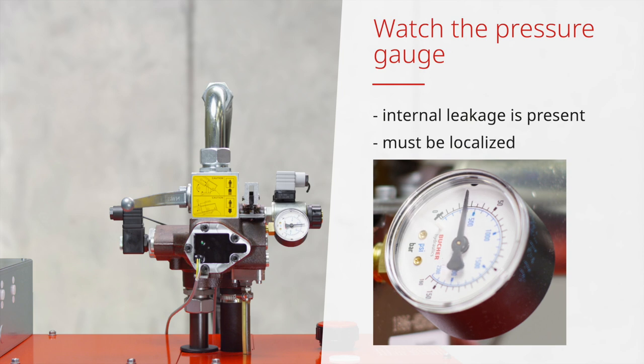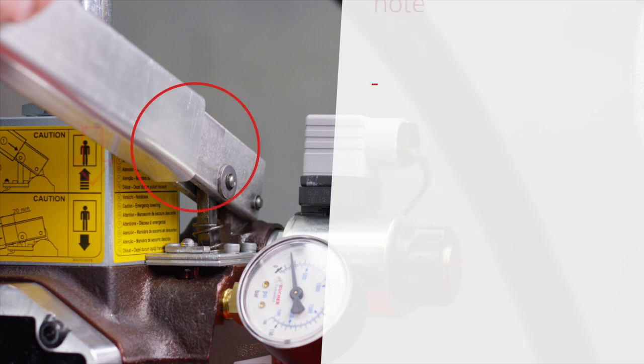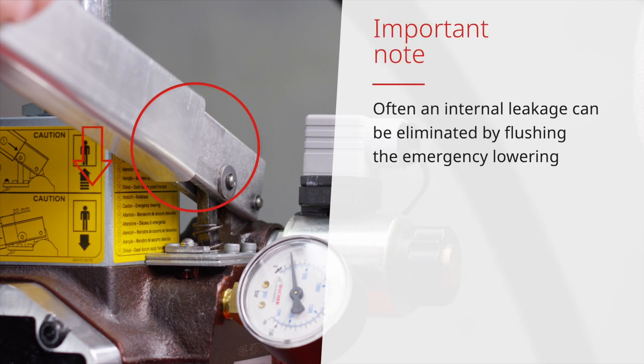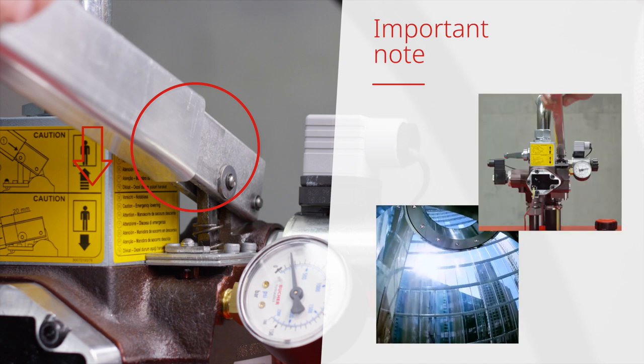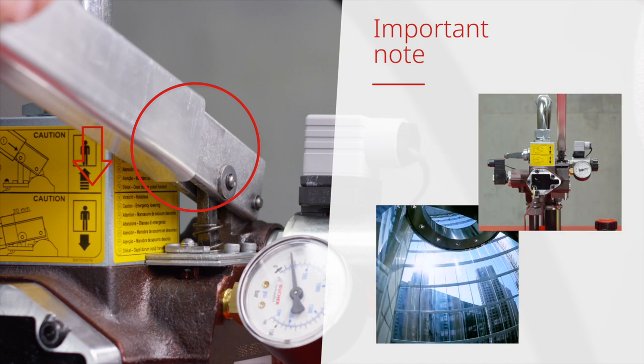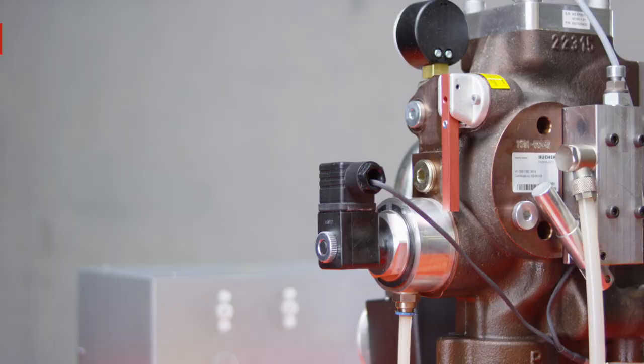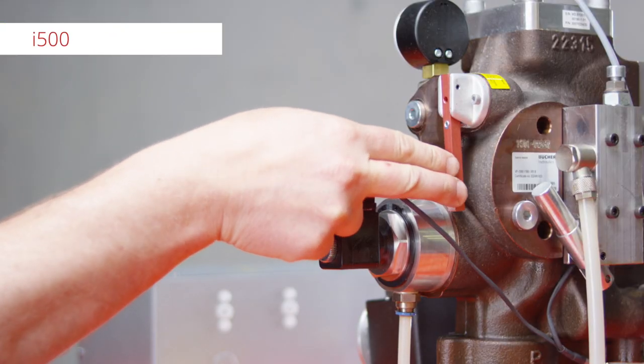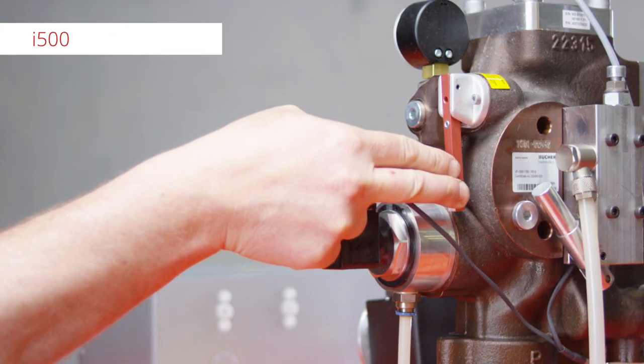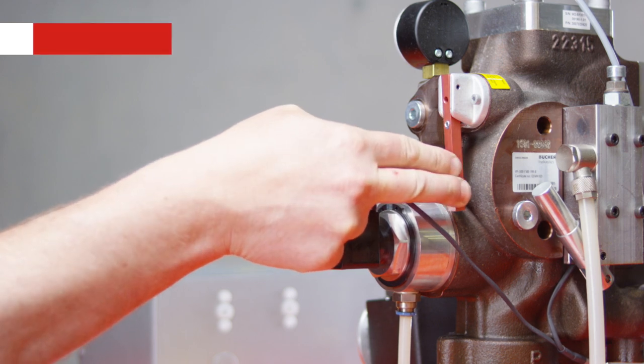It is generally recommended to flush the emergency lowering before starting further tests or repair measures. This requires the hand pump to be pressed down several times during an upward travel. On the i500, activate the emergency lowering several times during an upward travel.